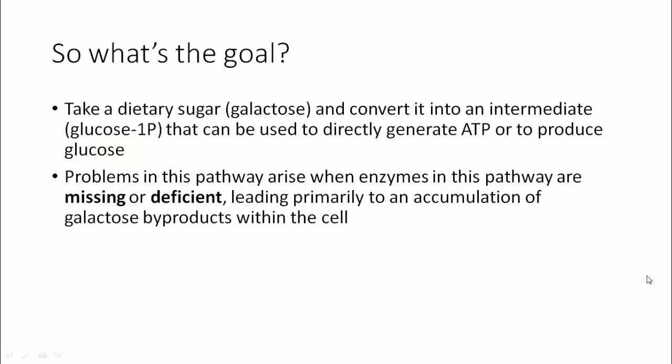We've essentially already answered what the goal of this pathway is. The overall goal is to take a dietary sugar, galactose, and convert it into glucose-1-phosphate, which can directly generate ATP through glycolysis or produce glucose for storage through gluconeogenesis. As with many pathways, problems arise when enzymes are missing or deficient, leading primarily to an accumulation of dangerous byproducts within the cell.